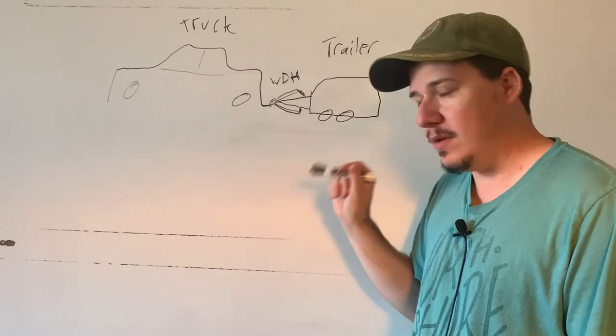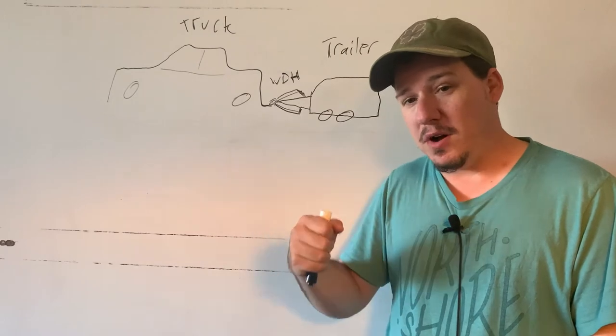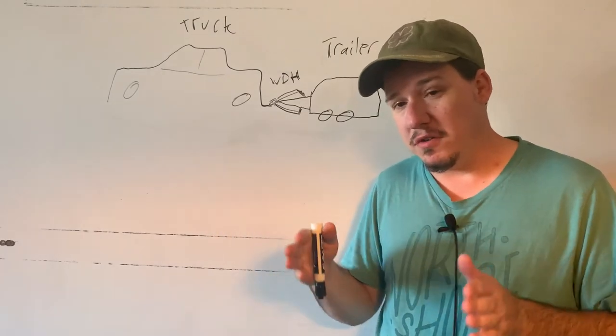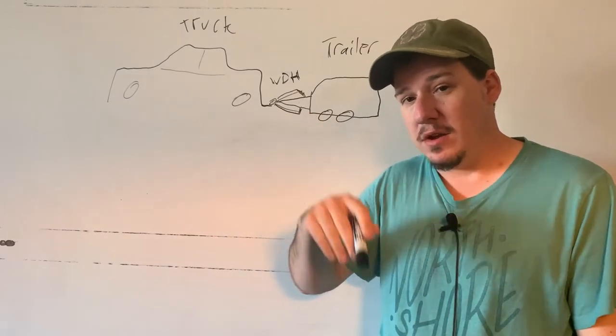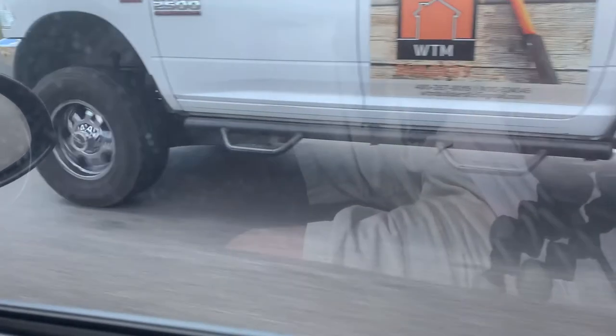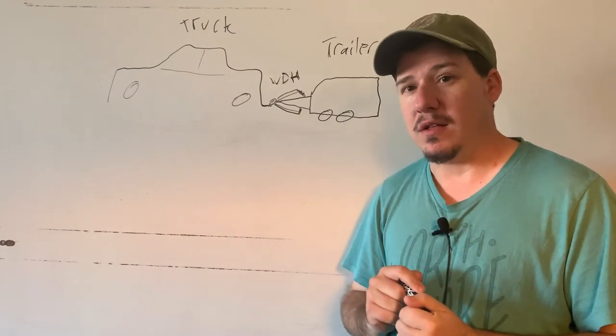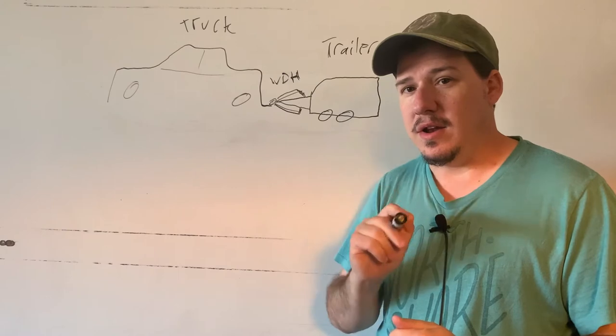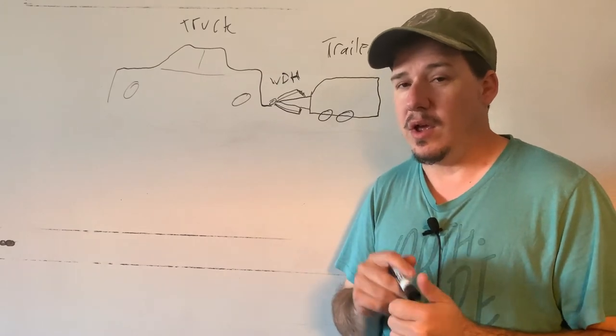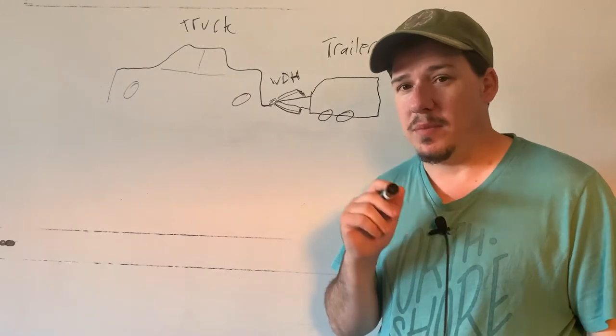And on the hitch you have two bars that come out and they hook onto the trailer frame. And those are the weight distribution bars. There's a chain, and where that chain was, that's where the latches, that's how you get the bars to be parallel with the frame. And I had it all set up correctly.